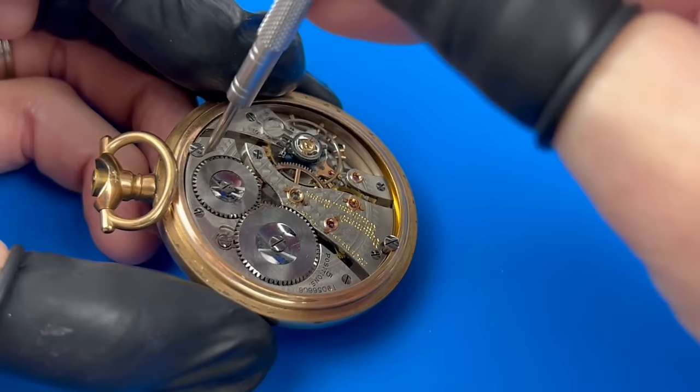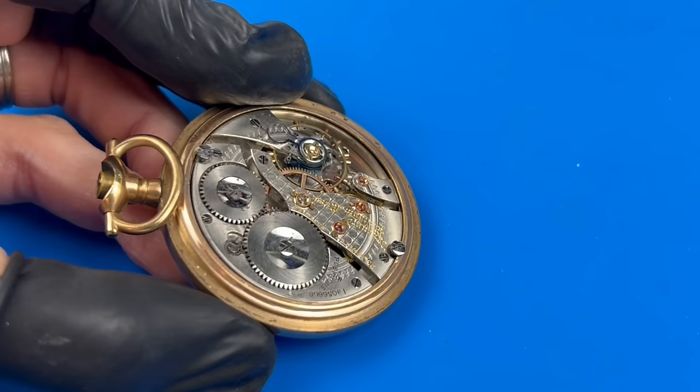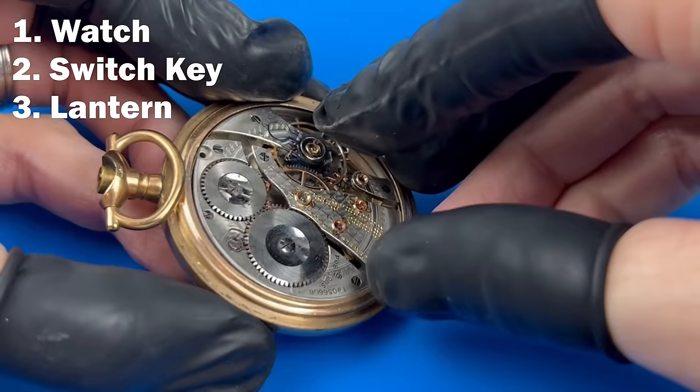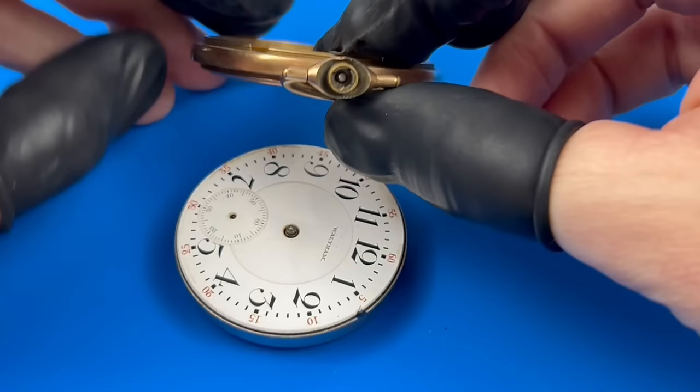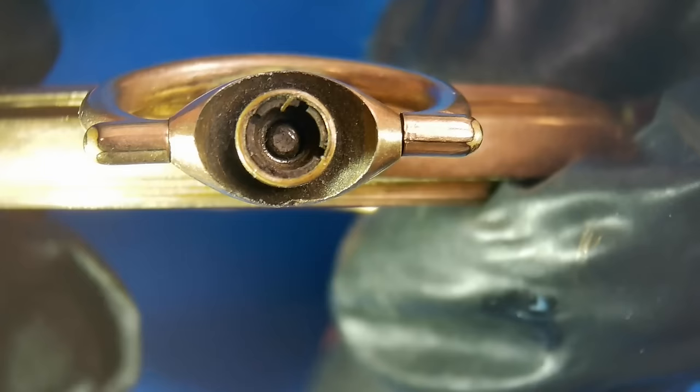Ray's wife had a checklist to help him prepare each time he left for work. Do you have your watch? Do you have the switch key? Do you have your lantern? Did you pack your slicker in case it rains? Did you pack the trip bag for clothes? Do you have cash in your wallet? In that order, so you can see where the watch stood in terms of priority.